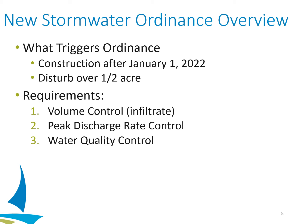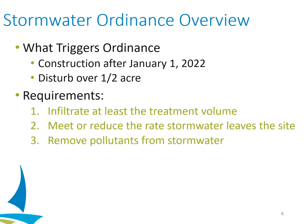Those three requirements are a volume control, a peak discharge rate control, and a water quality control. In layman's terms, we will need to infiltrate at least the treatment volume — I'll explain how we calculate that later. You need to meet or reduce the rate that stormwater leaves the site compared to existing conditions, and you need to remove a certain amount of pollutants from the stormwater leaving the site.